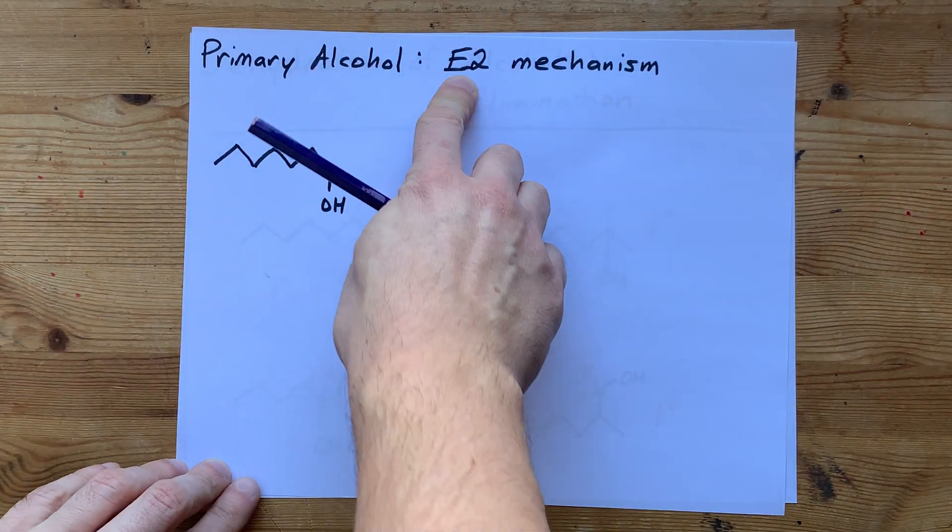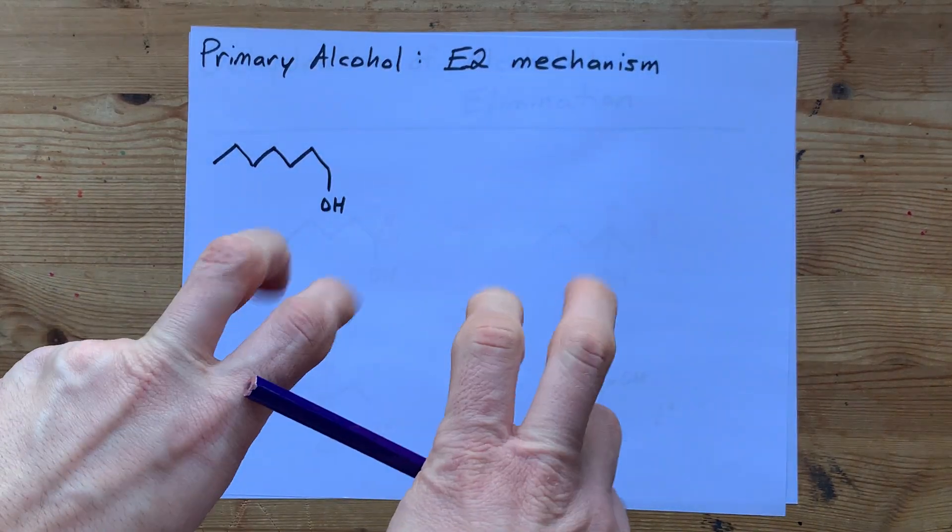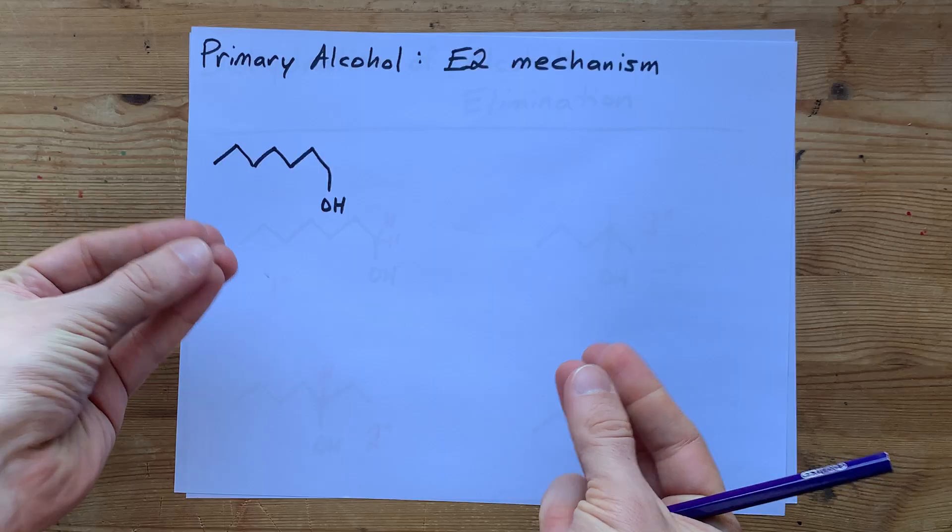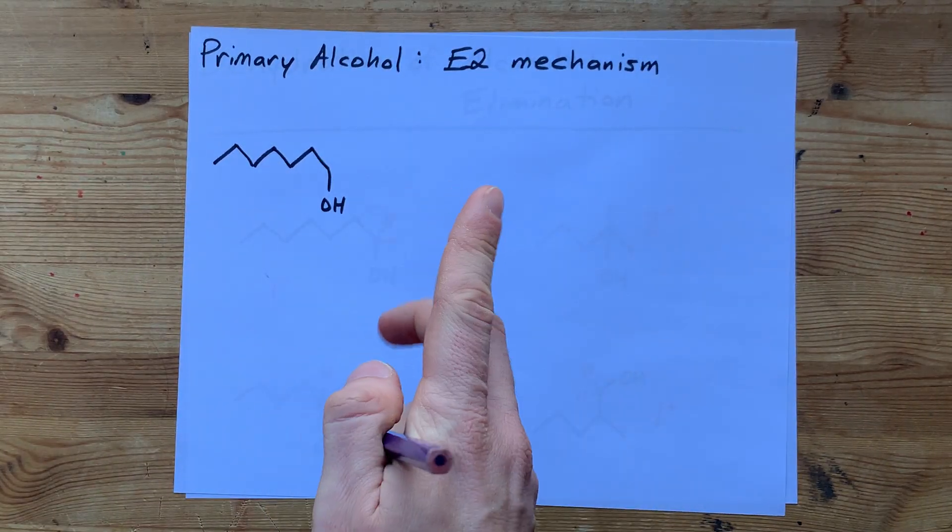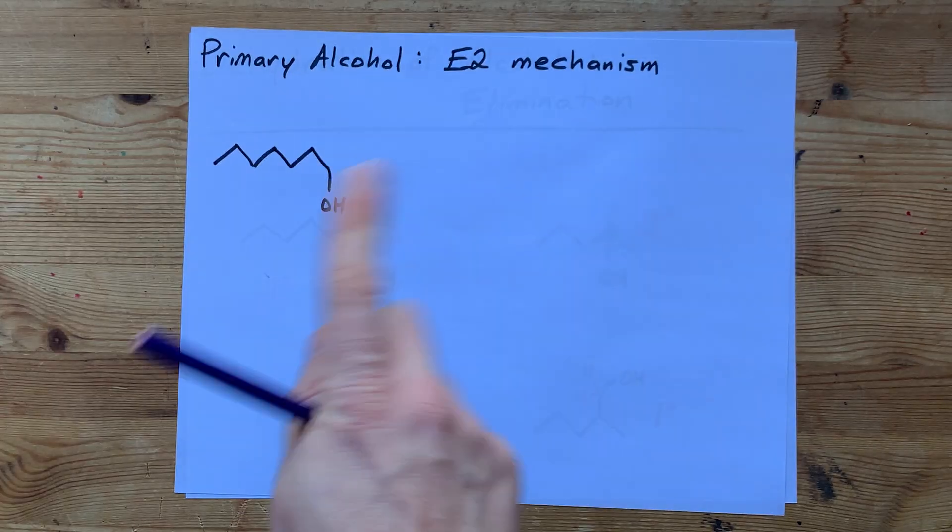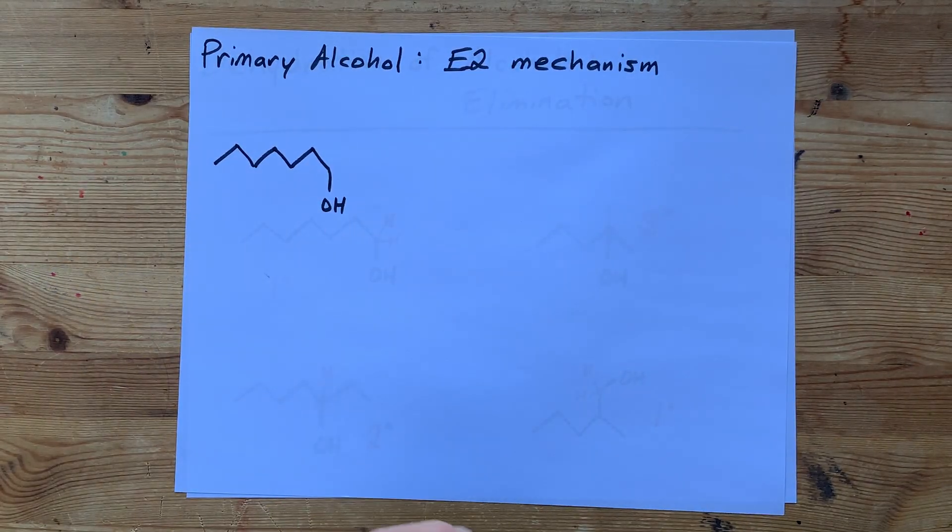Now, an E2 mechanism, the two represents bimolecular. That means there's two things colliding in the rate-limiting step. The rate-limiting step, I believe, is the second one here, so let's just talk about what's happening here first.